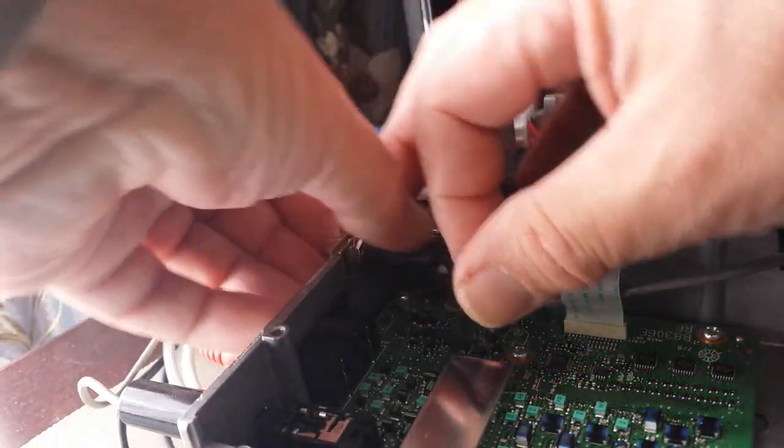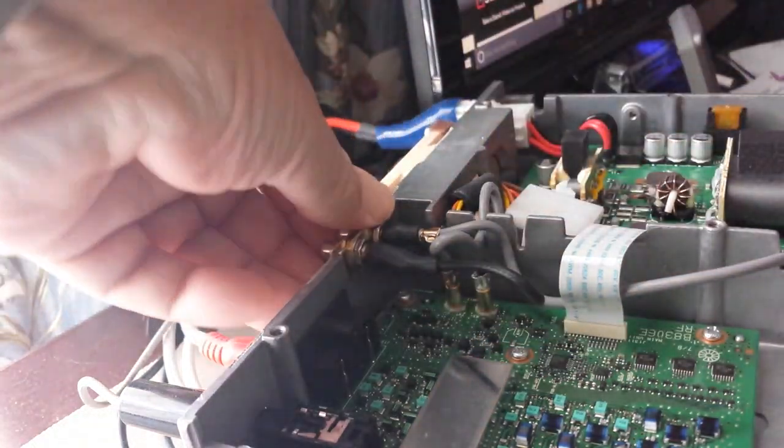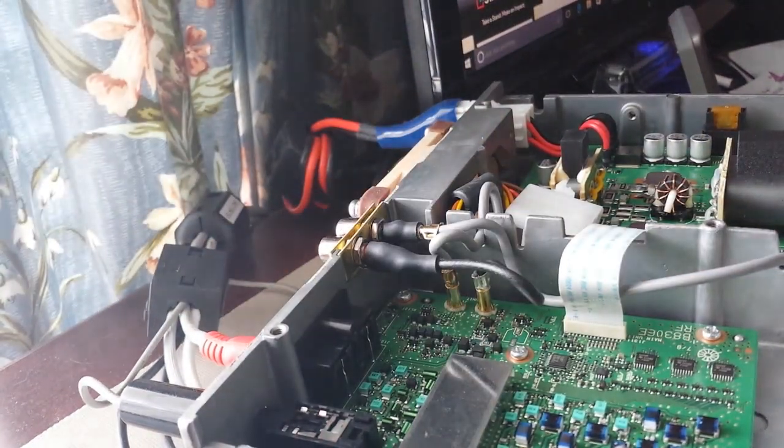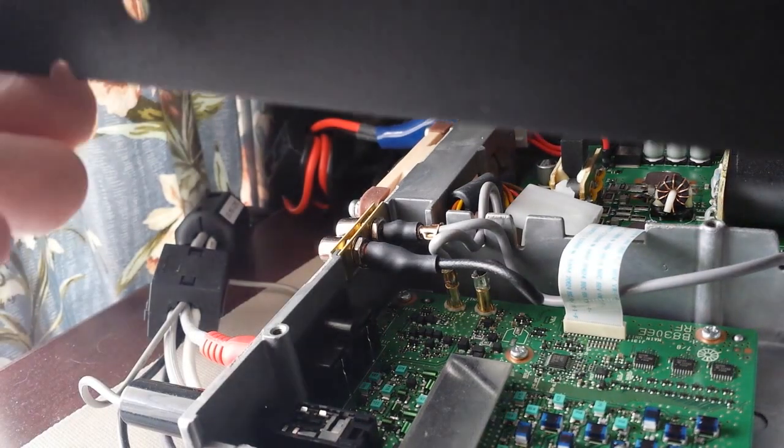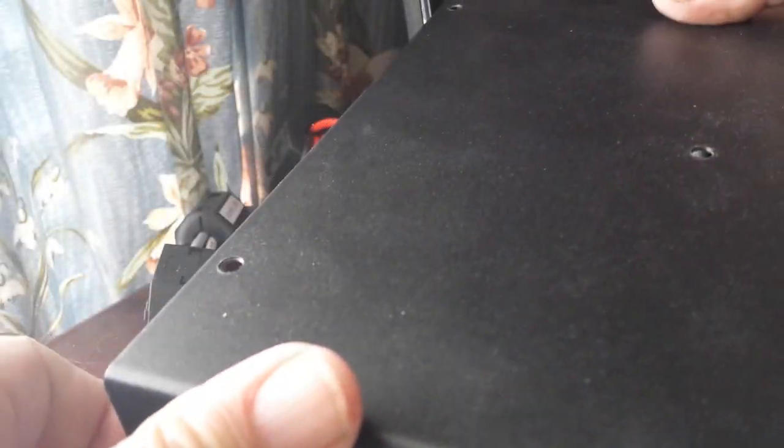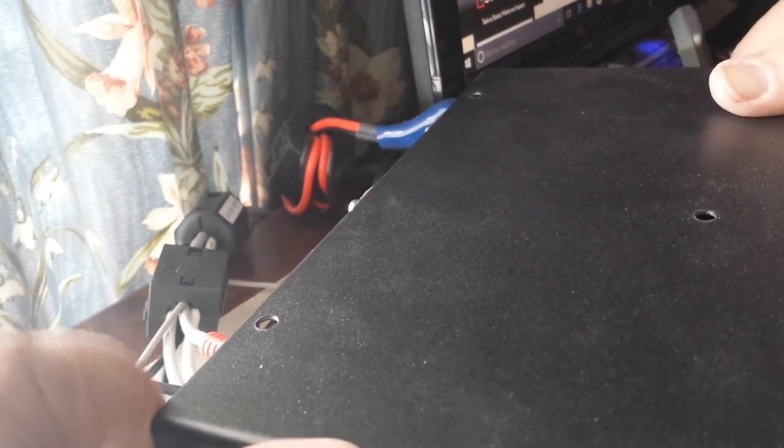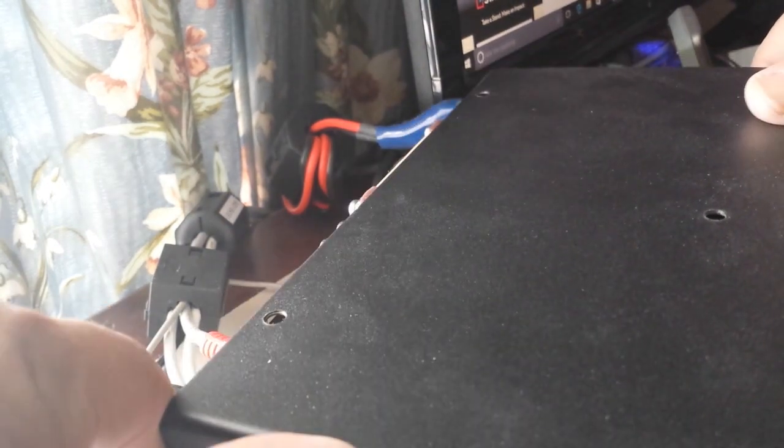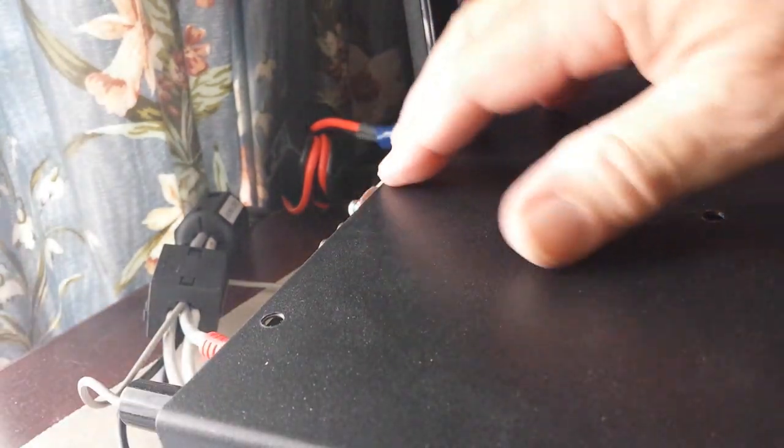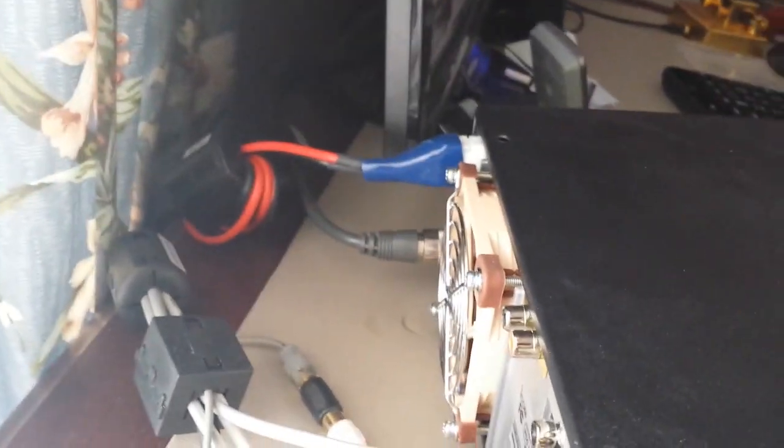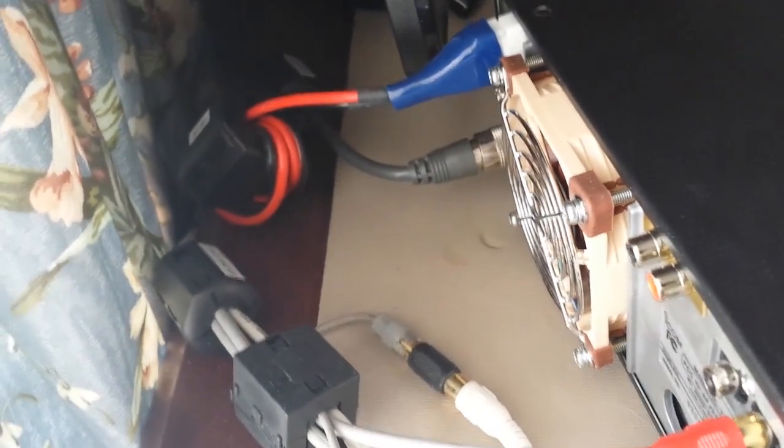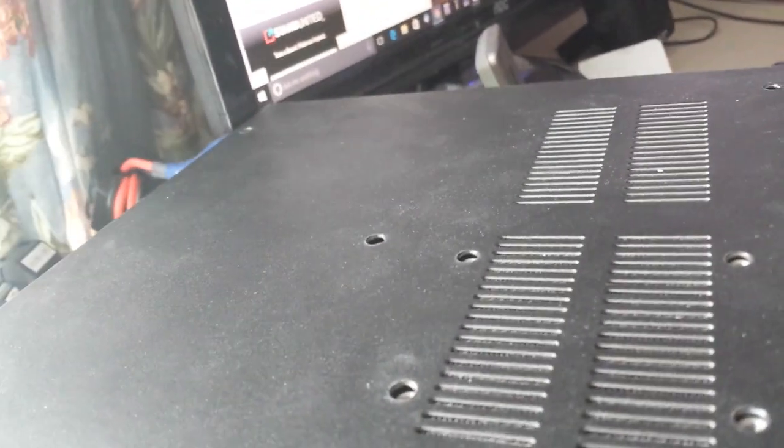So it looks like what we want to do is simply drop the lid back on. And there we go. Now let's see what it looks like here on the back. There's your two jacks. And we'll just put the screws back in and give it a try.